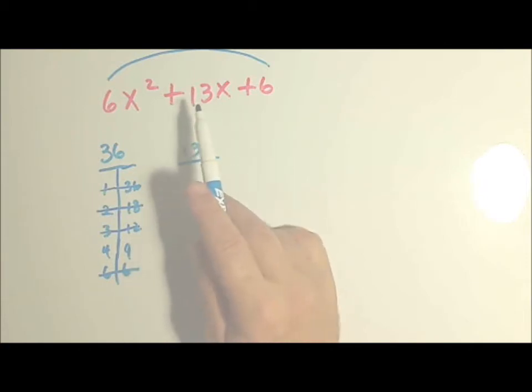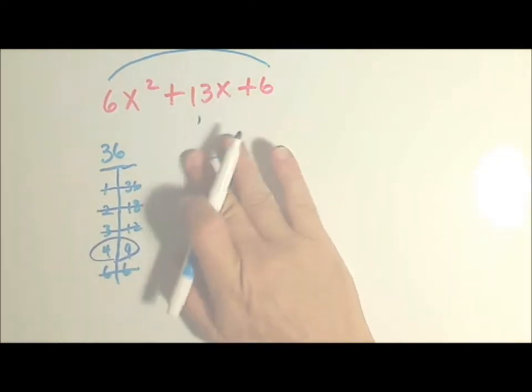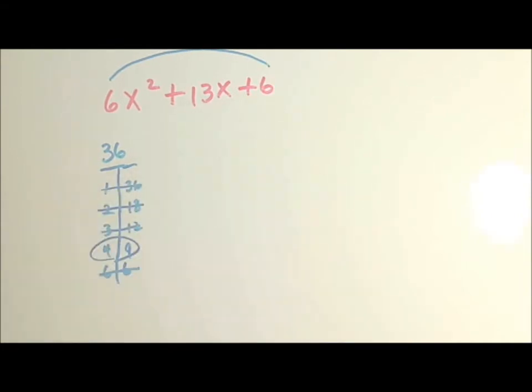We're going to break 13x into 4x and 9x or 9x and 4x. It doesn't matter which one's first. So now that we know we're going to break it into 4 and 9, we're going to rewrite this trinomial, which means three numbers, into a quad, which is 4.